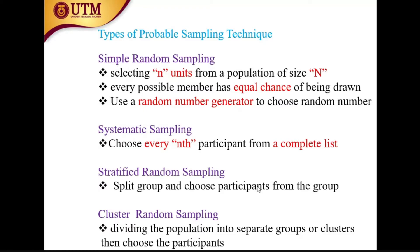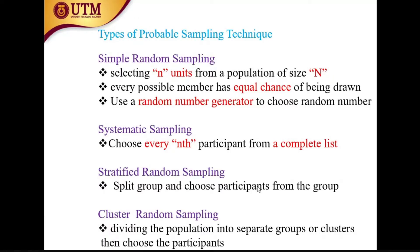In simple random sampling, say you have 40 students — this total is called capital N, the population. From this population you may choose 4 students whose IDs end with 6: the 6th, 16th, 26th, and 36th. These 4 students are called small n, the sample. Systematic sampling is similar to simple random but requires a complete list of respondents. In simple random sampling your respondents are not predefined, whereas in systematic sampling you must know your full population.